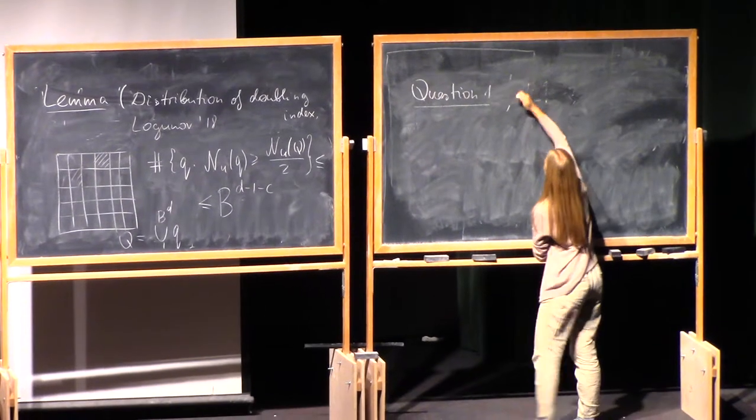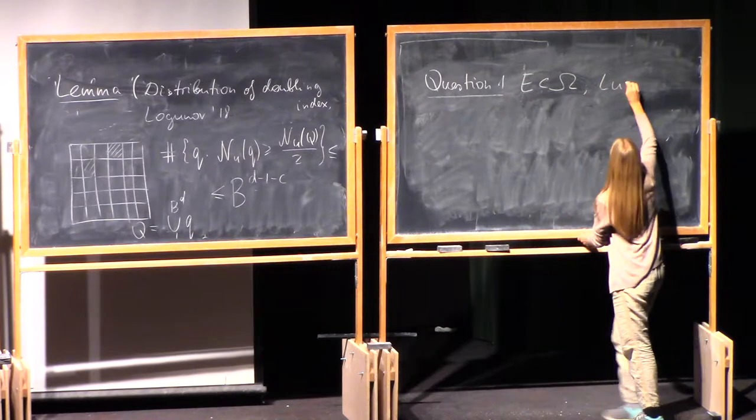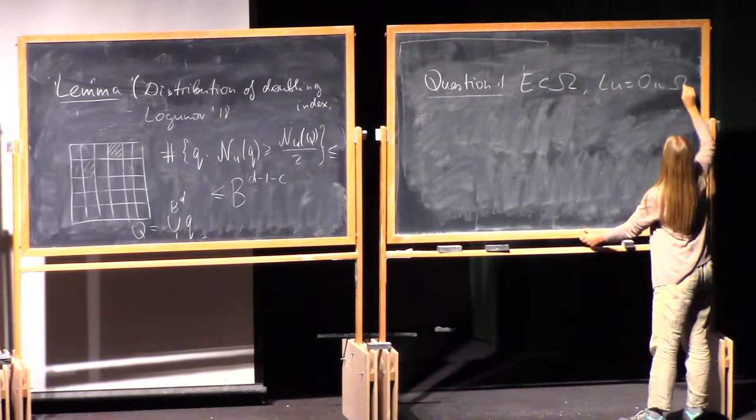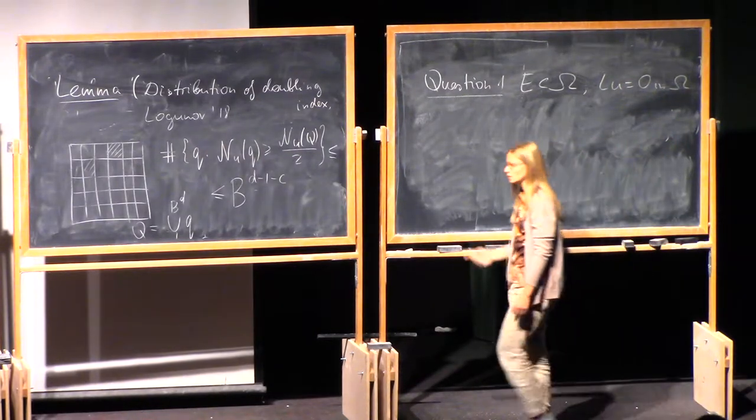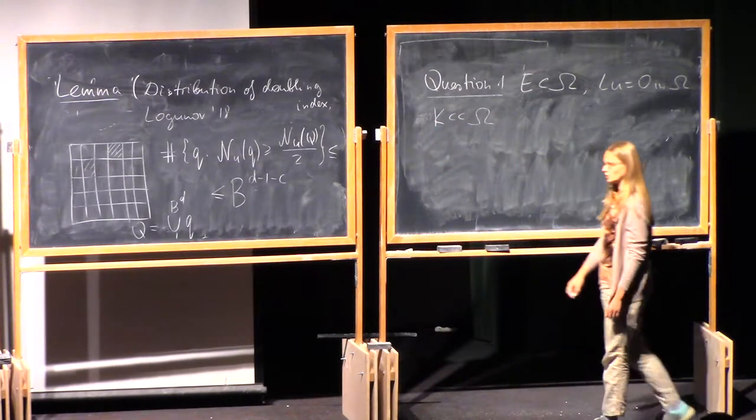I can say now that I have my equation in omega. E is subset, compact subset of omega. Then